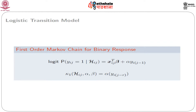Now consider a logistic transition model. A first-order Markov chain for binary response is: logit P(y_{ij} = 1 | η_{ij}) = x_{ij}^T β + α · y_{i,j-1}. So the logit of y_{ij} = 1 depends on the past response. Because it is a Markov chain of order 1, we have r=1, and κ_1(η_{ij}, α, β) = α · y_{i,j-1}.